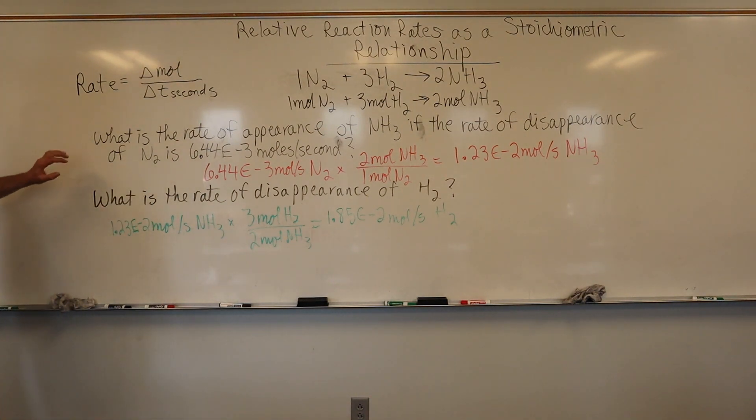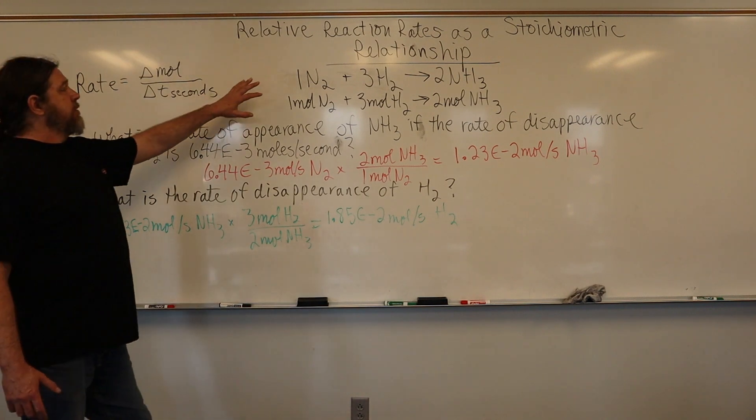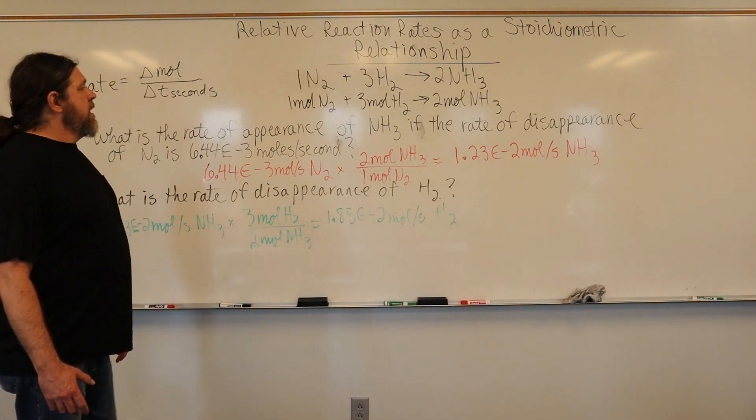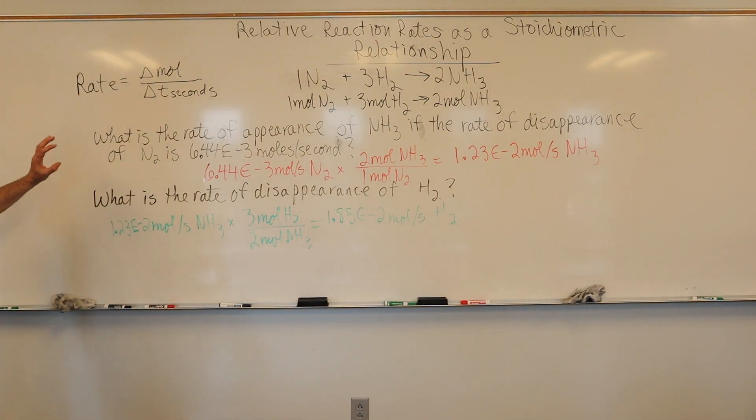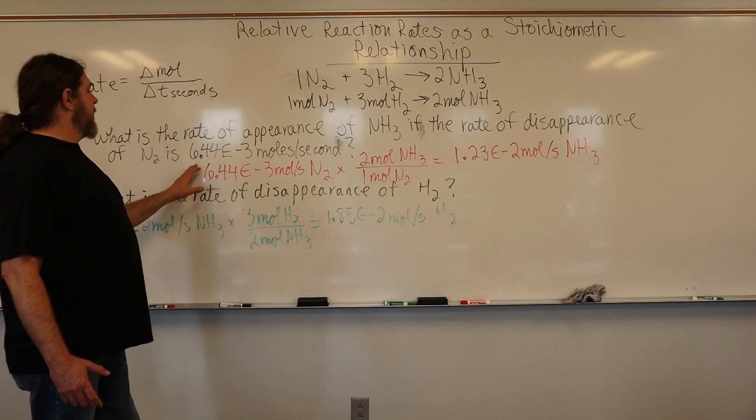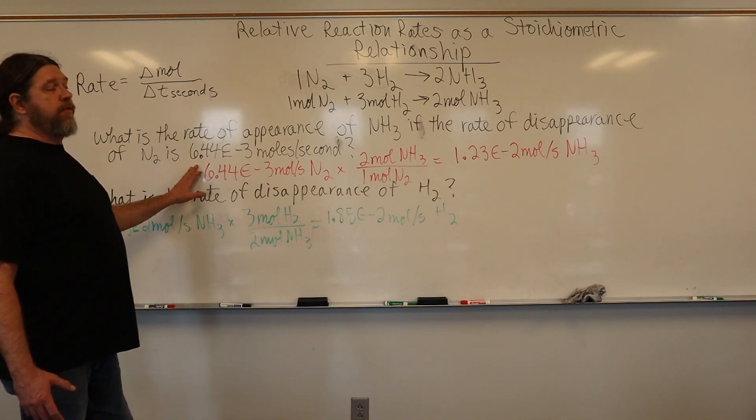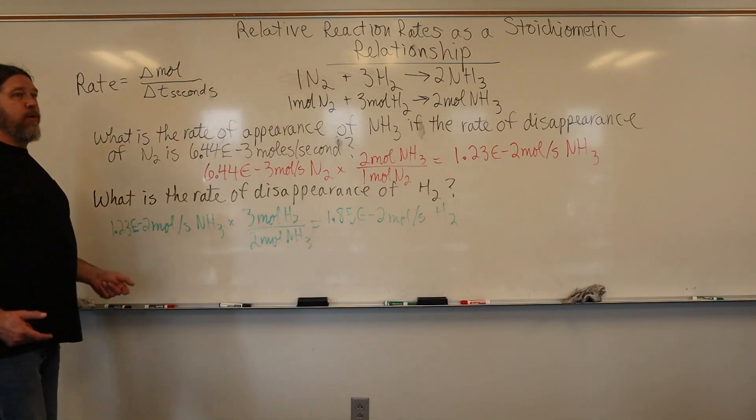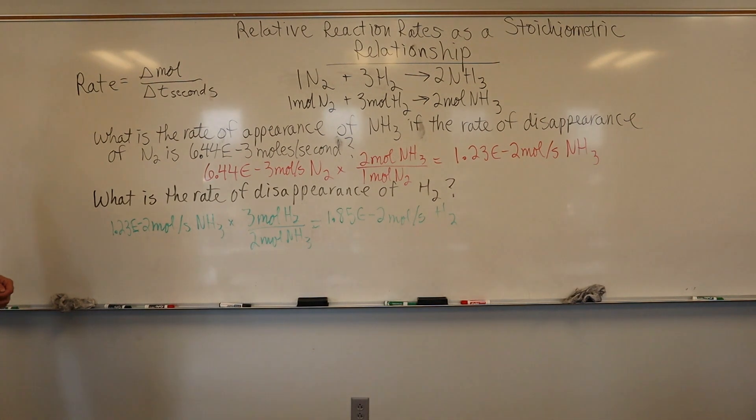We have a situation here where we are synthesizing ammonia from nitrogen and hydrogen. Let's say that we know that nitrogen in this reaction is disappearing at a rate of 6.44 times 10 to the negative 3 moles per second, or 6.44 millimoles per second.